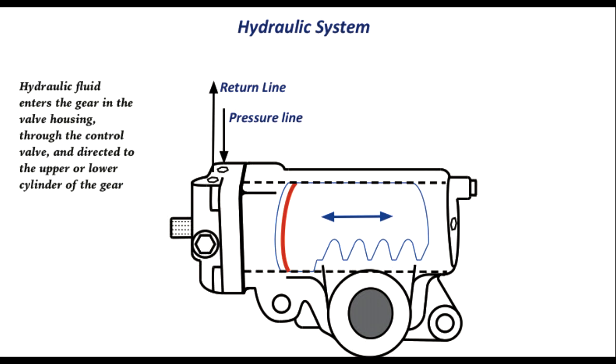The hydraulic system of the gear works when hydraulic fluid enters the gear through the pressure line in the valve housing. The fluid then travels to the control valve and is directed either to the upper or lower cylinder of the gear, depending on which direction or which end of the gear is asking for assist.